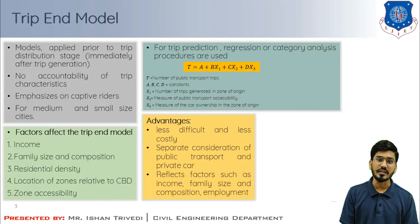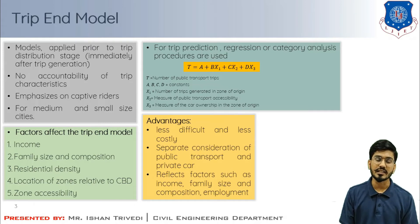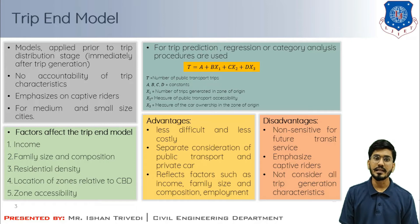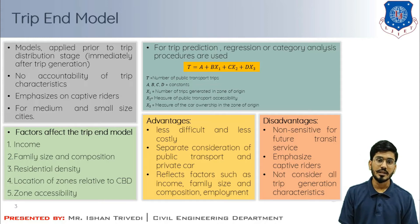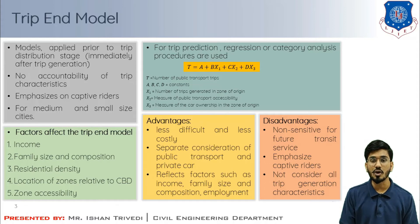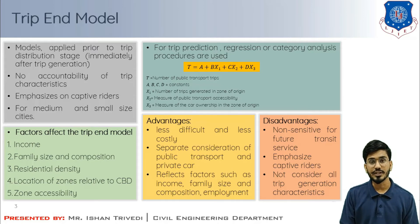This method reflects factors such as income, car ownership, family size and composition, employment, and so on — characteristics which affect a lot in trip generation. Regarding the disadvantages of trip end model split: these are non-sensitive to improvement in future transit services, non-sensitive to the market, they emphasize on captive riders only, service characteristics do not dominate, and the measure is based only on socio-economic characteristics of trip makers.